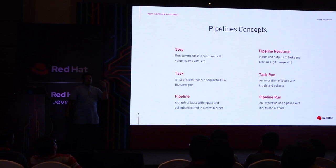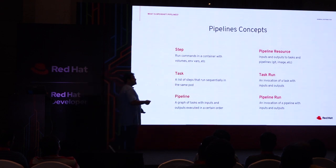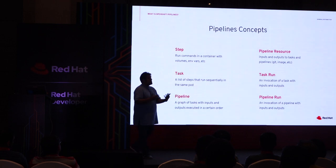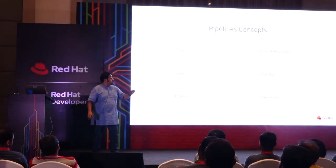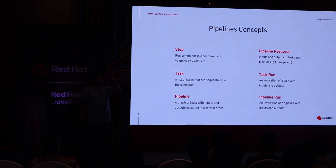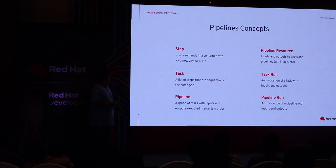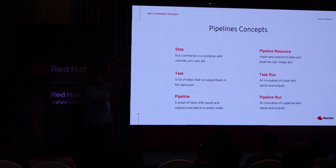The smallest unit is a step — it's the individual task you do within a build. For example, checking out source from GitHub is one step; running a Maven build is another step; converting the output into a container image is the third step; and pushing that container image to a container registry is the fourth step. These individual steps make up what is called a task. Steps are executed sequentially within a container. Once all steps complete, the task is complete. A pipeline is a composite of multiple tasks — just as a task has multiple steps, a pipeline has multiple tasks.